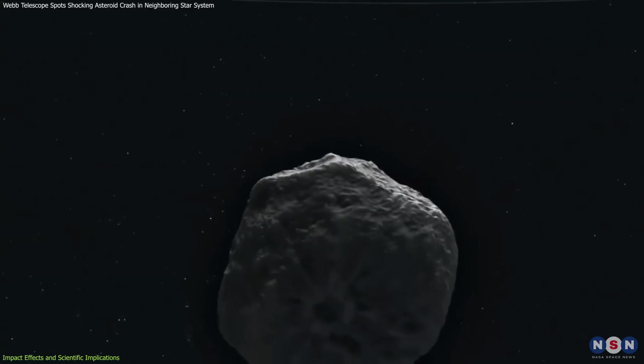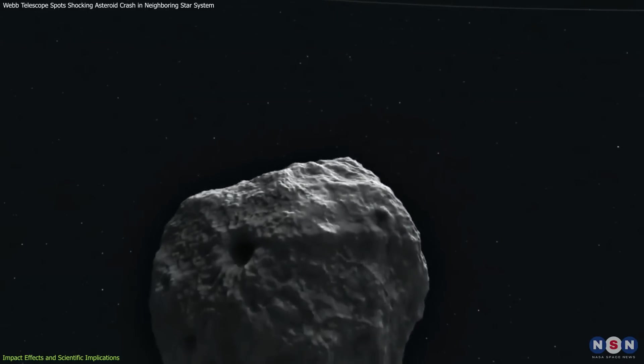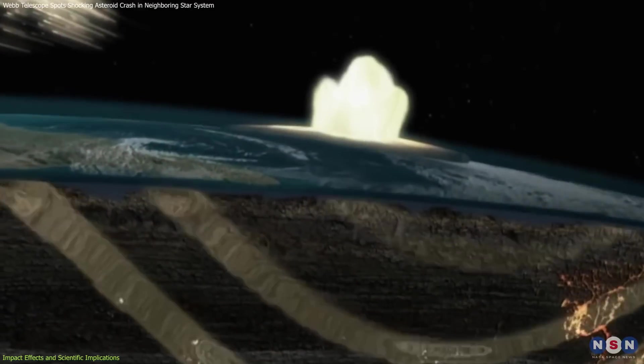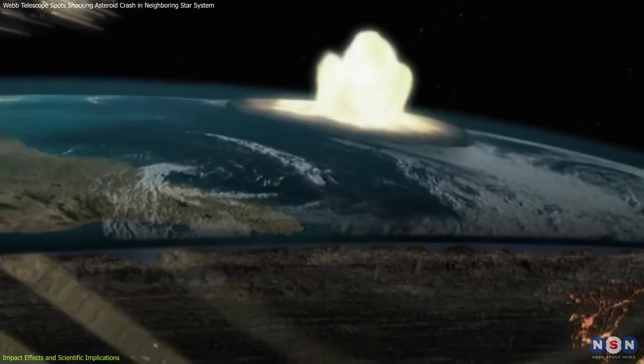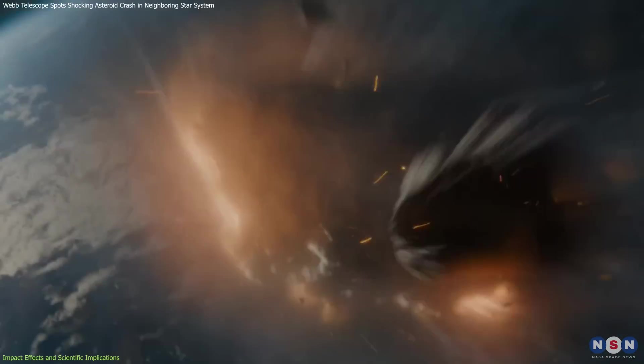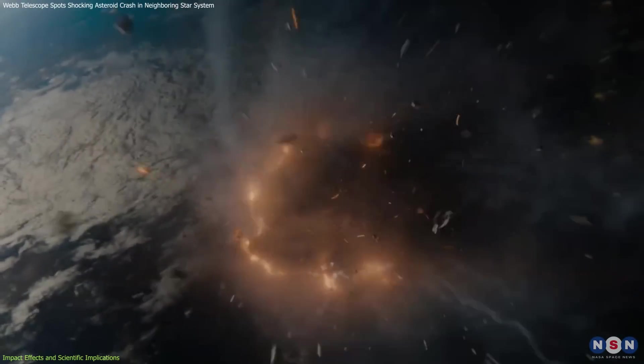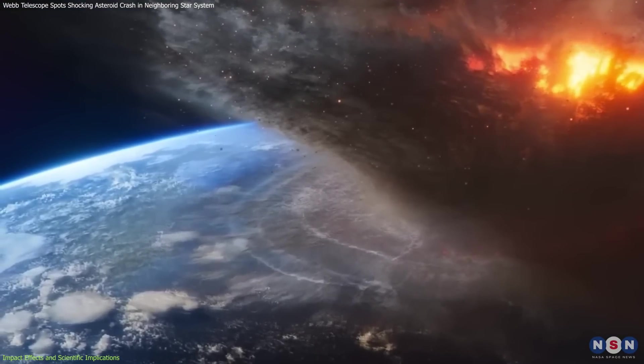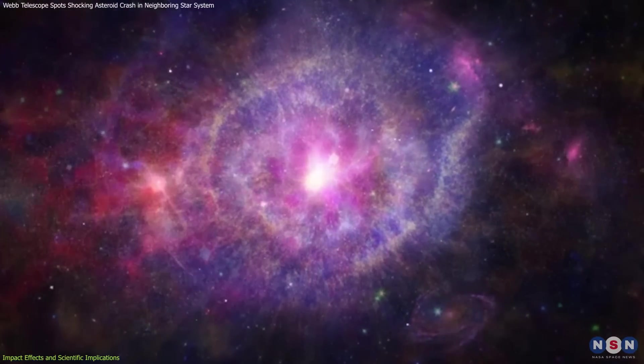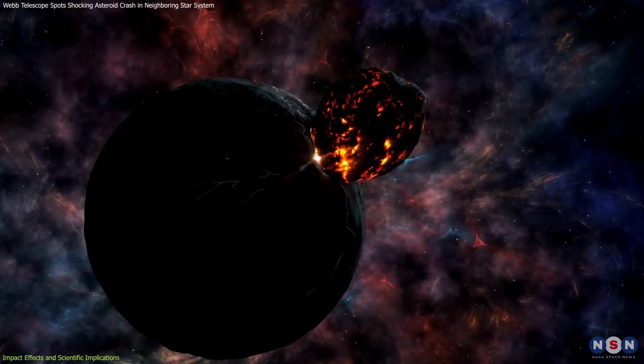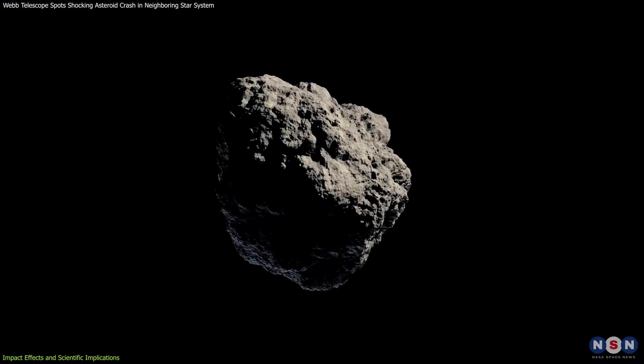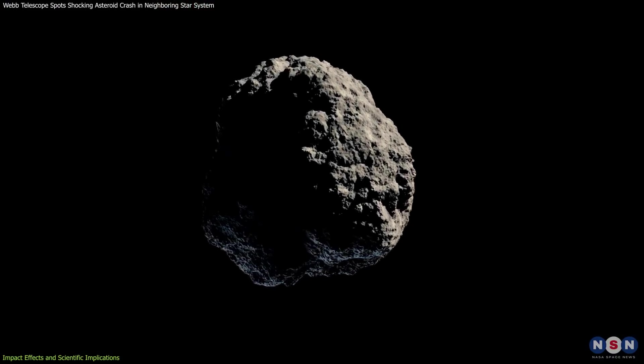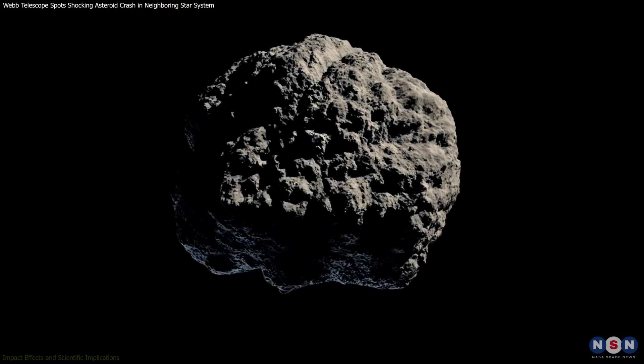Understanding the size and composition of the colliding asteroids is crucial. Scientists estimate the size of the dust cloud to be about 100,000 times that of the asteroid that caused the Chicxulub impact. This massive scale highlights the cataclysmic nature of the event. By analyzing the dust composition, researchers can infer the characteristics of the parent bodies, determining whether they were rocky, metallic, or a combination of both.